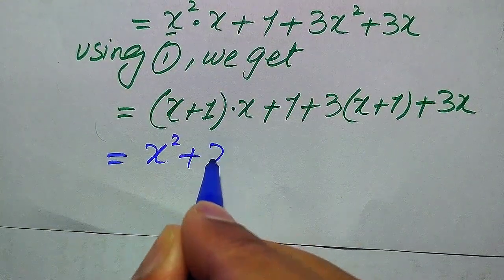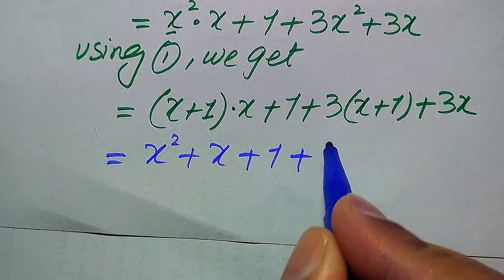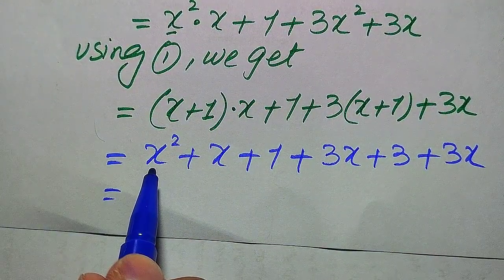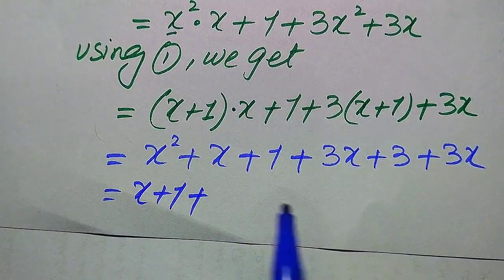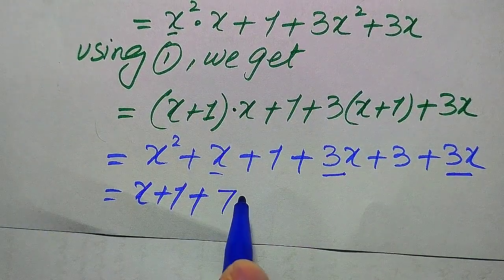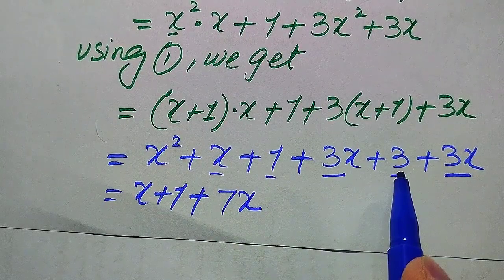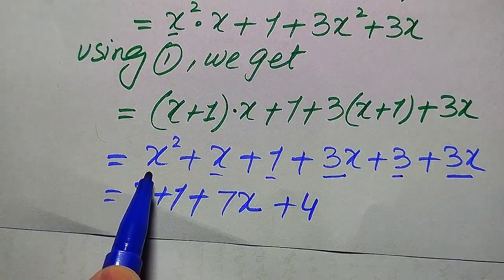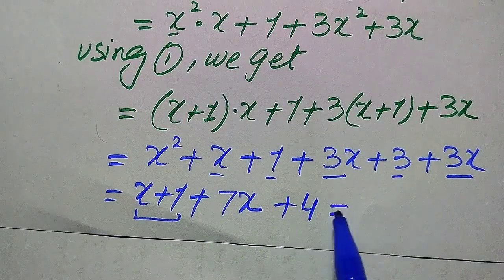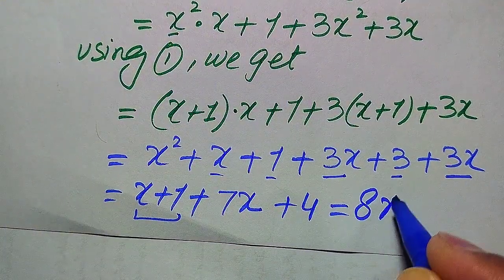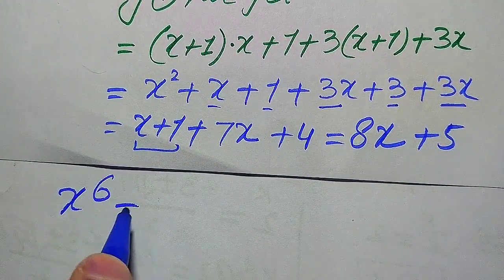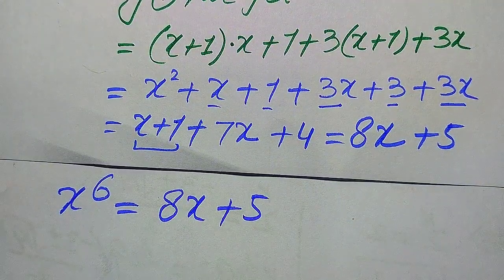Multiplying 3 on both values gives 3x plus 3, plus 3x. Substituting x² = x + 1 again, we get x plus 1 plus 3x plus 3 plus 3x. Summing up: x plus 3x plus 3x becomes 7x, and 1 plus 3 becomes 4. So we get x to the power of 6 equals 8x plus 5.